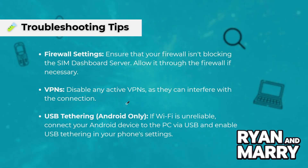Troubleshooting tips. Firewall settings: ensure that your firewall isn't blocking the SIM Dashboard server — allow it through the firewall if necessary. VPNs: disable any active VPNs, as they can interfere with the connection. If Wi-Fi is unreliable, connect your Android device to the PC via USB and enable USB tethering in your phone settings.